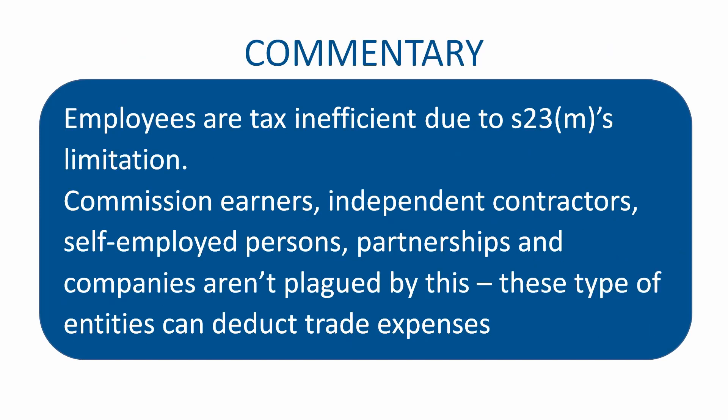You can get a refund and reduce your taxes through things like your retirement annuity, a travel allowance deduction, or joining a medical aid for tax credits — all options worth considering as a standard employee. Unfortunately, employees are generally quite tax-inefficient, especially due to section 23M, which means employees can't deduct trade expenses unless they earn commission or are an independent contractor. Most other entities — commission earners, independent contractors, self-employed persons, partnerships, companies — are not limited by section 23M and have far more tools to reduce their tax.